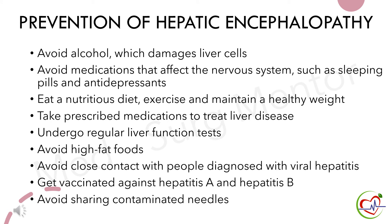Important preventive measures of hepatic encephalopathy include: avoid alcohol which damages liver cells; avoid medications that affect the nervous system such as sleeping pills and antidepressants; eat a nutritious diet; exercise and maintain a healthy weight; take prescribed medications to treat liver disease; undergo regular liver function tests; avoid high fat foods; avoid close contact with people diagnosed with viral hepatitis; get vaccinated against hepatitis A and hepatitis B; and avoid sharing contaminated needles.